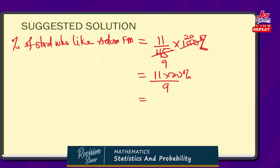When that is done, we know that 11 times 20 — if you can't do that quickly, you can easily multiply 11 by 2 to get 22, and knowing that it wasn't 2 but rather 20, we add a zero to it. Meaning that 11 by 20 gives us 220. And this has to be divided by 9. So we can go ahead and simplify using our long division method.